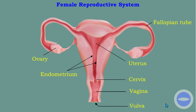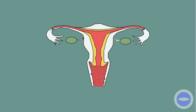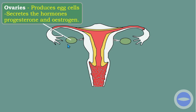Now let's go to functions. The function of the ovaries is to produce egg cells. Egg cells are produced inside the ovaries.